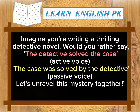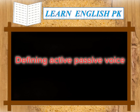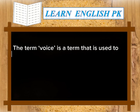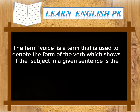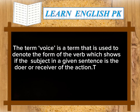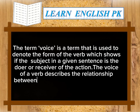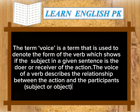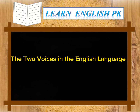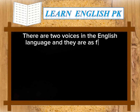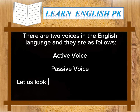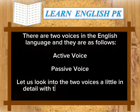Let's unravel this mystery together. The term 'voice' is used to denote the form of a verb, which shows whether the subject in a given sentence is the doer or the receiver of the action. The voice of a verb describes the relationship between the action and the participants — subject or object — in a sentence. There are two voices in the English language: active voice and passive voice.